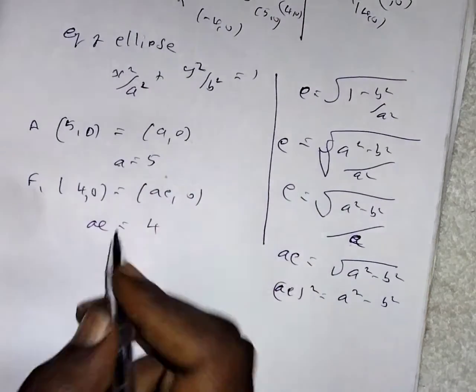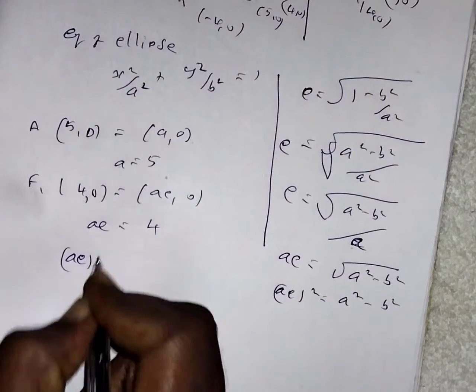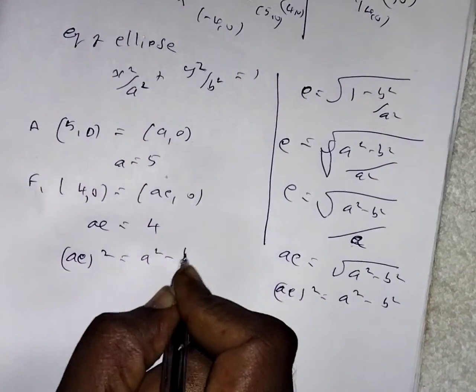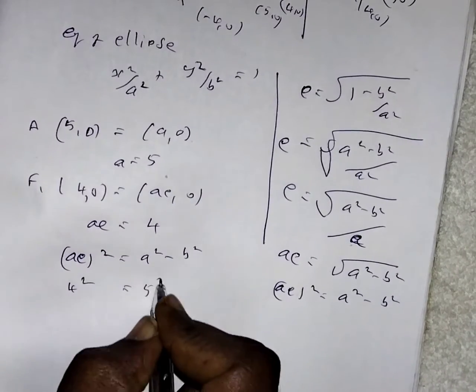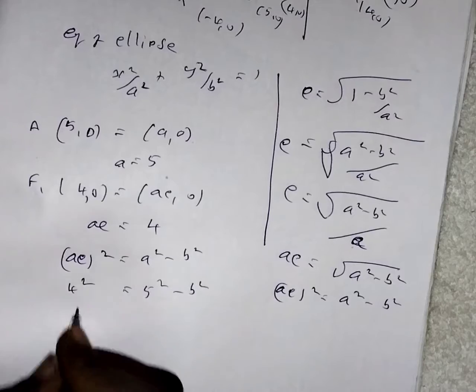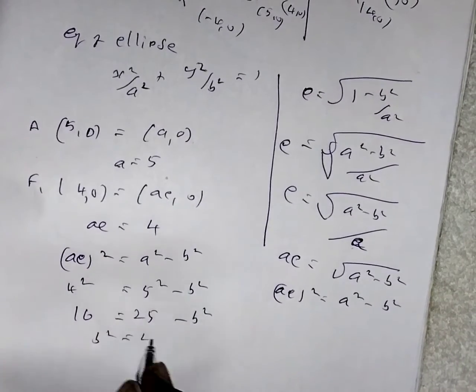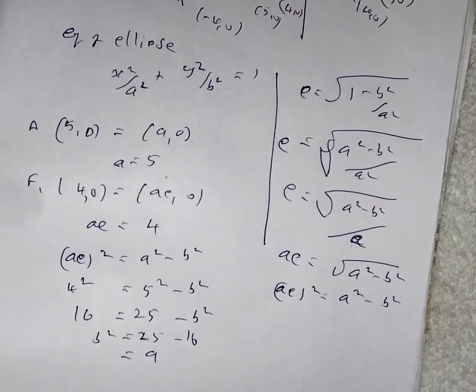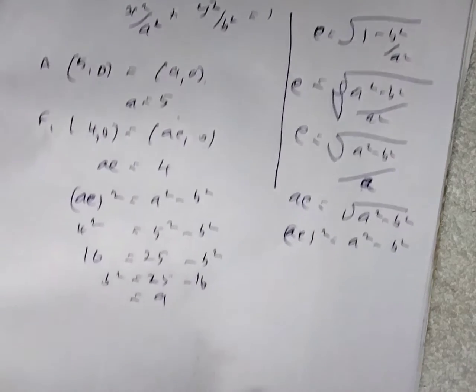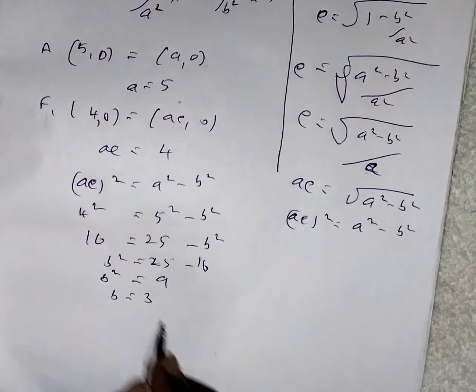Here A equals 5. Next you want to find the B value, use that formula: AE the whole squared equals A squared minus B squared. We know the AE value is 4 and A value is 5. Then 16 equals 25 minus B squared. B squared equals 25 minus 16, which becomes 9. So B equals 3.